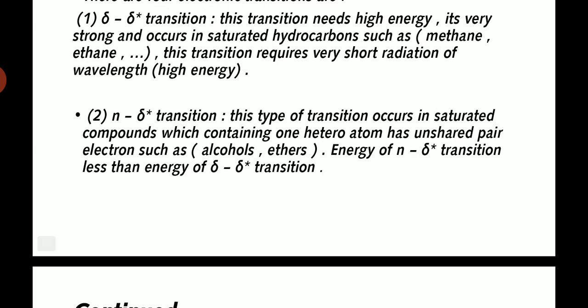Second, n-sigma transition. This type of transition occurs in saturated compounds which contain one heteroatom that has unshared pairs of electrons, such as alcohols and ethers.